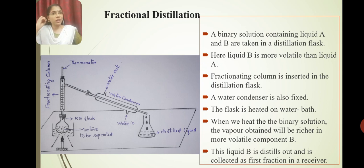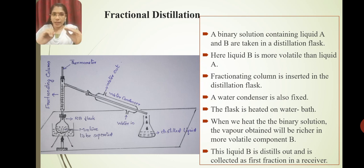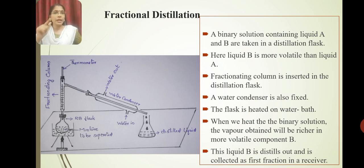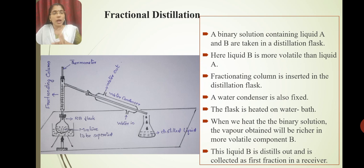We work with a binary solution — liquid A and liquid B — added to the RB flask. When we heat the binary solution, the more volatile liquid evaporates first. The vapor obtained will be richer in the more volatile component B.